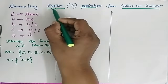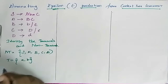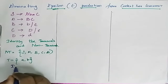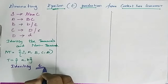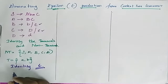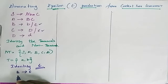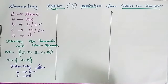In order to remove epsilon, we have to identify where epsilon appears. We have epsilon in B → ε and C → ε. We have to remove these epsilons one by one. Let us first remove B → ε.